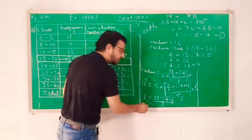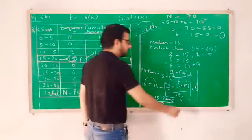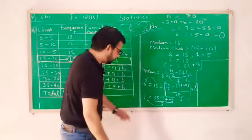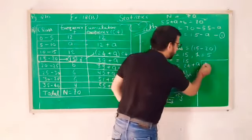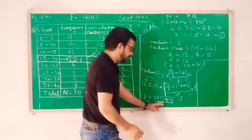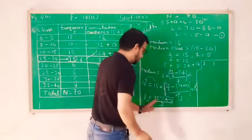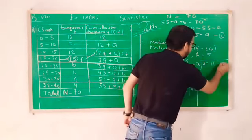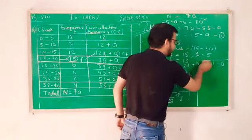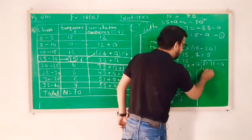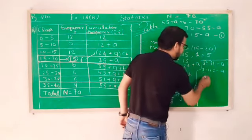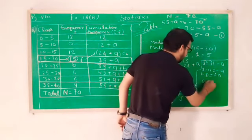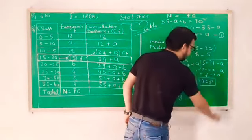Now shift this. So after shifting, 3 on this side. 35 minus 24, 5, 4, 1. And 3 times, 2, 1. And minus a. So after shifting the value, shifting a, shifting the value, 3 minus 11 equal to minus 3a. Minus 8 equal to minus 3a. After dividing by minus 3, a value came as 8.